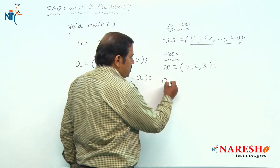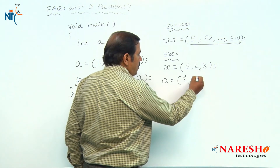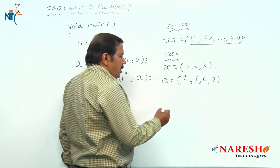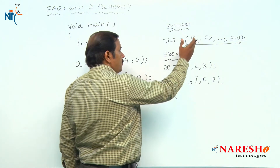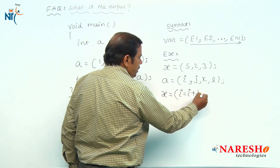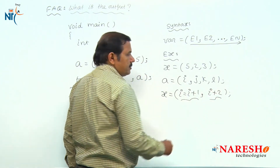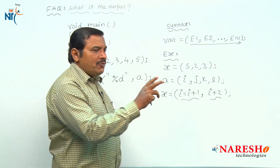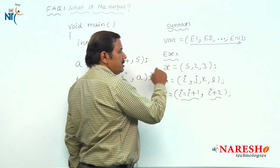Similarly, the operands may also be variables: i, j, k, l — and we can also use expressions as operands for the comma operator, such as i = i+1 as expression 1 and i+2 as expression 2. In all these examples, the last expression value is treated as the final result and is assigned to the variable.